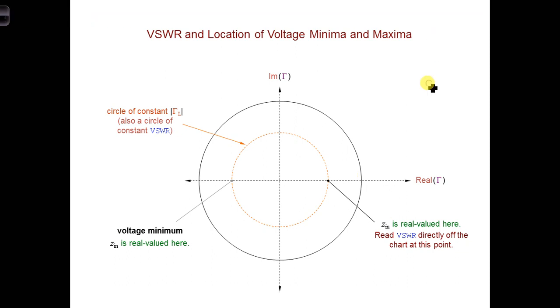The last thing we need to do is figure out how to use the Smith chart to determine the VSWR value and where the voltage maxima and minima occur on the transmission line.